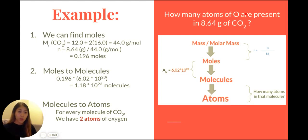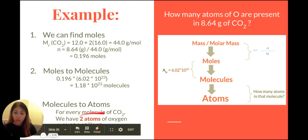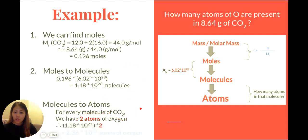This means from our first video, we need to multiply our value by 2 to figure out how many oxygens we have. And that is your answer: 2.36 times 10 to the 23 atoms of oxygen.